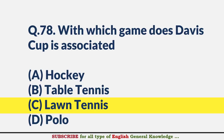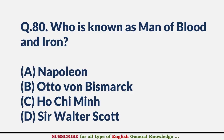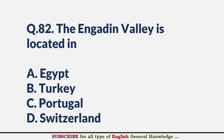The first Indian to cross the seven important seas by swimming? — Answer B: Bula Chaudhuri. Who is known as the man of blood and iron? — Answer B: Otto von Bismarck. The Panama Canal, a man-made 77-kilometer waterway, connects — Answer C: the Atlantic Ocean and the Pacific Ocean. The Engadin Valley is located in — Answer D: Switzerland.